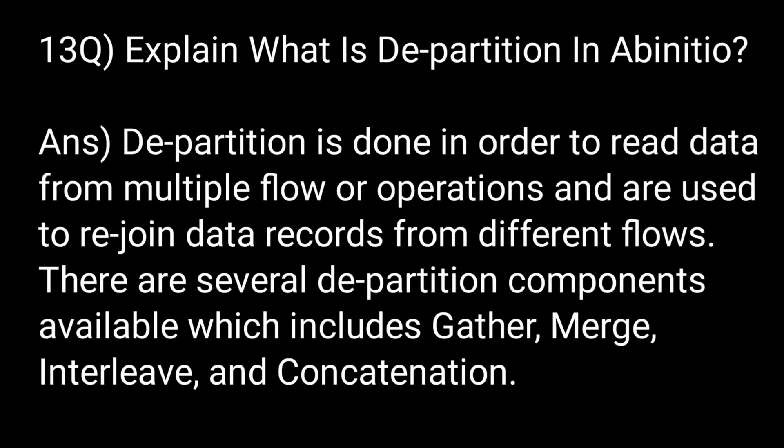Explain what is D-partition in Ab initio. D-partition is done in order to read data from multiple flows or operations and is used to rejoin data records from different flows. There are several D-partition components available, which include gather, merge, interleave, and concatenation.